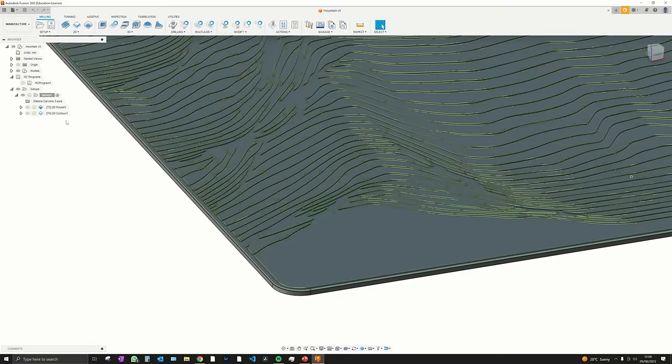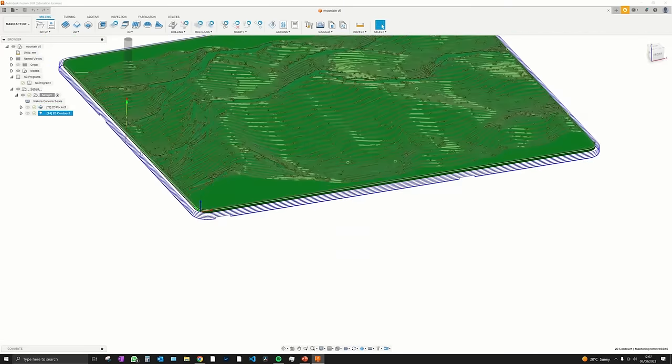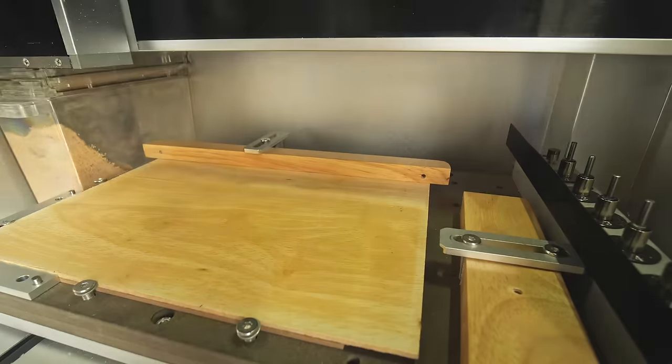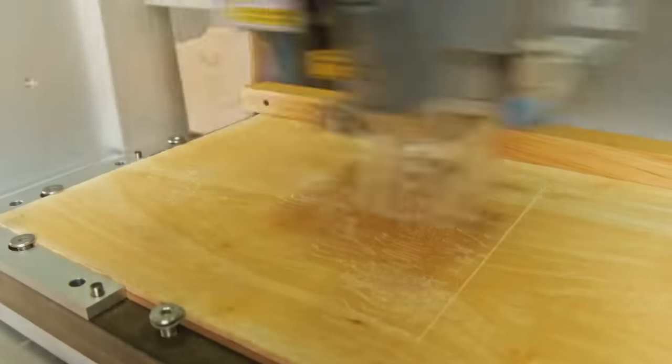I set the CNC machining to engrave those black lines by 0.3mm into the wood, and then I did the same thing in Lightburn that I did previously to then highlight all of that with the laser.